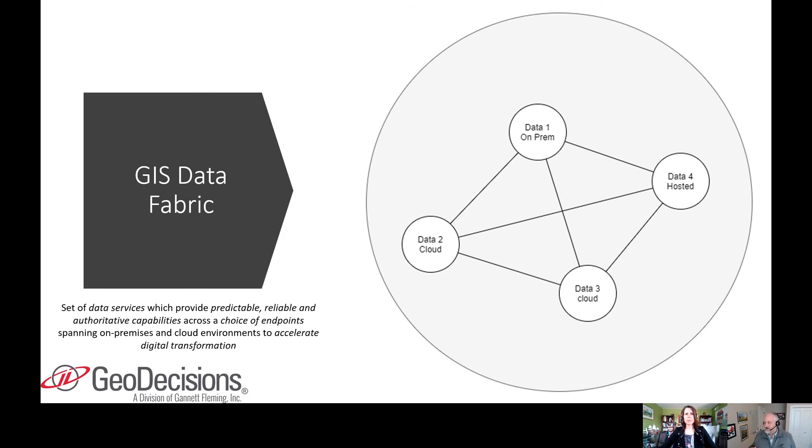The lines represent those data services. So the line is really the REST being able to talk to the data through the REST API.